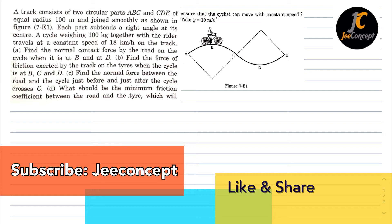Each part subtends a right angle at the center. A cycle weighing 100 kg together with the rider travels at a constant speed of 18 km per hour on the track and we have to find the multiple different parts. So let's discuss one by one.